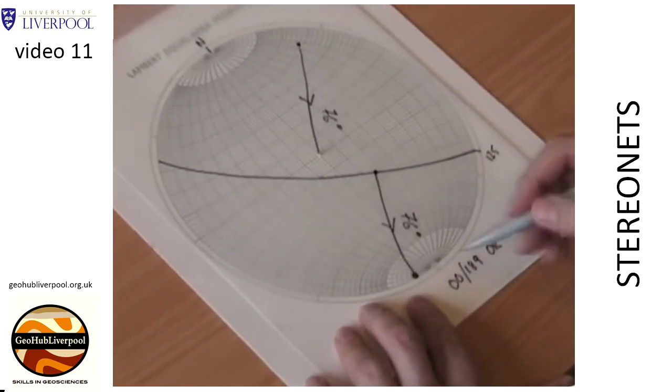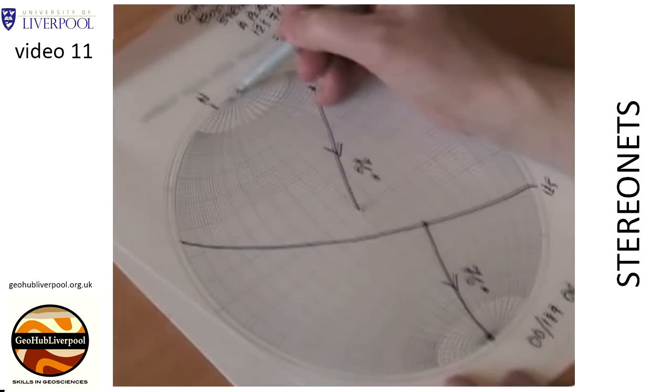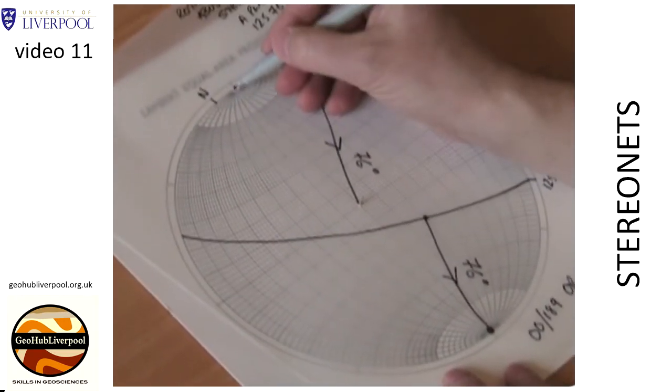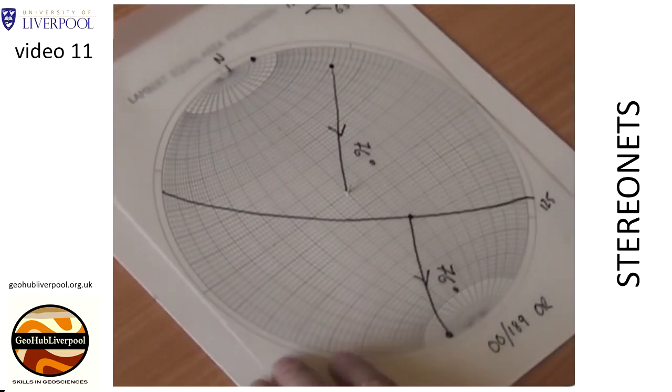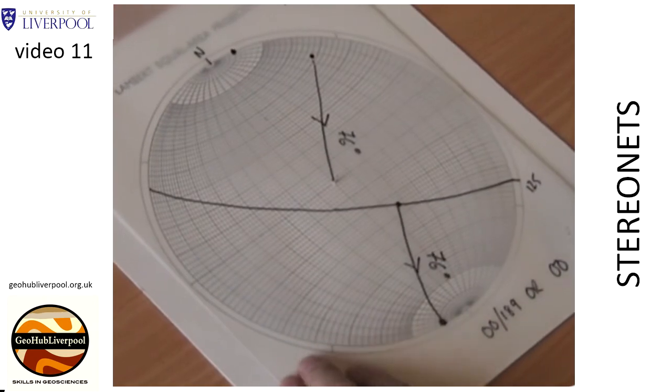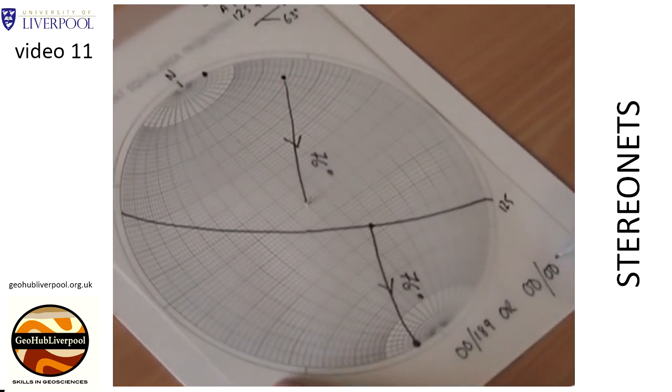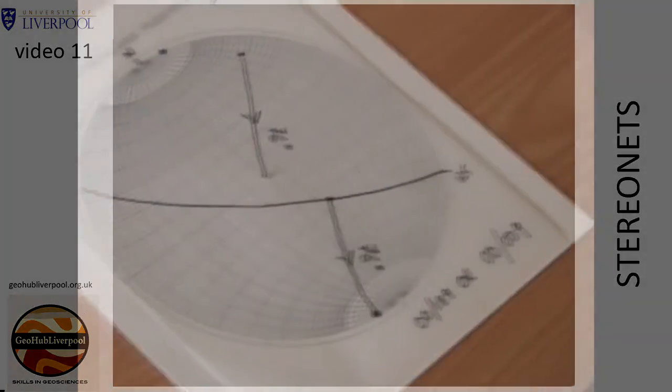The original trend or bearing of the sedimentary structure can be read off from the stereogram. In this example, the original orientation of the linear structure or sedimentary structure was 189 degrees or 009 degrees.